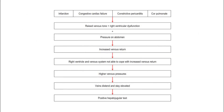This flow chart shows how hepatojugular reflux occurs when there is an infarction, congestive cardiac failure, constrictive pericarditis, or cor pulmonale. There is raised venous tone and right ventricular dysfunction. When pressure is added onto the abdomen, this increases venous return. The right ventricle and venous system are unable to cope with the increased venous return, leading to higher venous pressure, causing the veins to be dilated and stay elevated — hence the positive hepatojugular reflux.